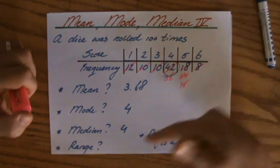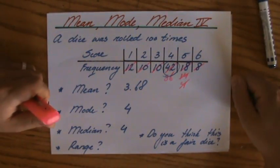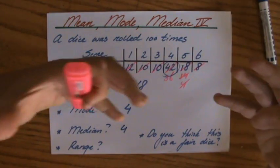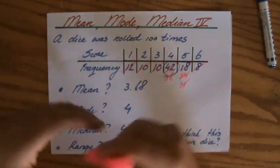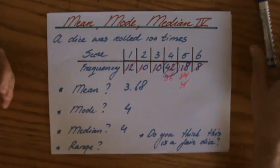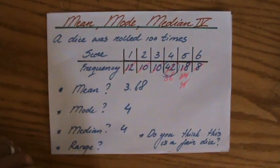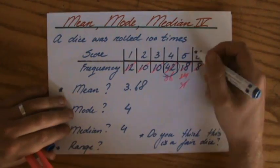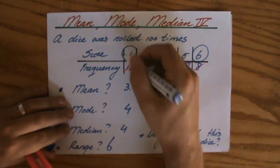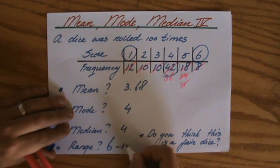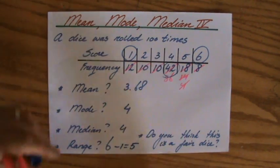The range is the highest value take away the lowest value. The highest value is 6 and the lowest value is 1, so the range is 5.